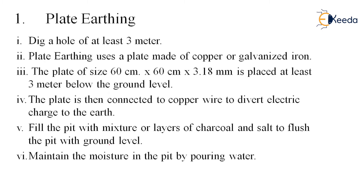Let's see what is plate earthing. First, dig a hole of at least 3 meters depth. Plate earthing uses a plate made of copper or galvanized iron. A plate of size 60 cm × 60 cm × 3.8 mm is placed at least 3 meters below the ground level. The plate is then connected to a copper wire to divert the electric current to the earth. Fill the pit with alternate layers of charcoal and salt to flush the pit with the ground level.